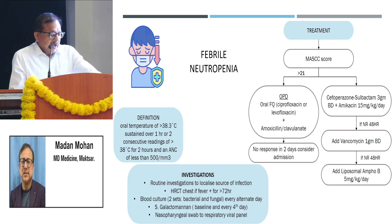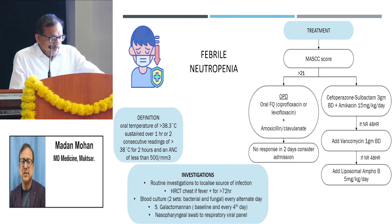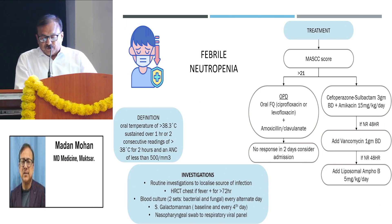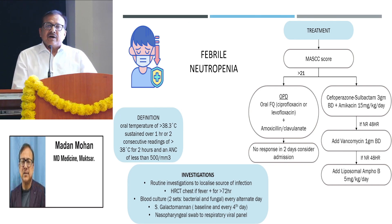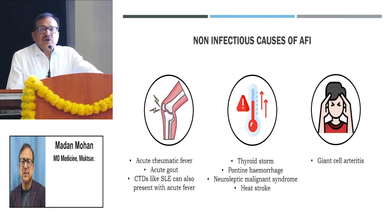For febrile neutropenic patients — any oral temperature of more than 38 degrees centigrade sustained over one hour, or two consecutive readings of 38 degrees centigrade for two hours, with absolute neutrophil count less than 500 should be considered febrile neutropenic and treated very aggressively with hospital admission. Started on cefoperazone-sulbactam along with amikacin — all such patients should be monitored every day, and if no response at 48 hours we should add vancomycin. If still no response in two more days, we should consider antifungal — liposomal amphotericin remains the drug of choice. We should also keep in mind some non-infectious causes of febrile illness like pontine hemorrhage and neuromalignant syndrome.